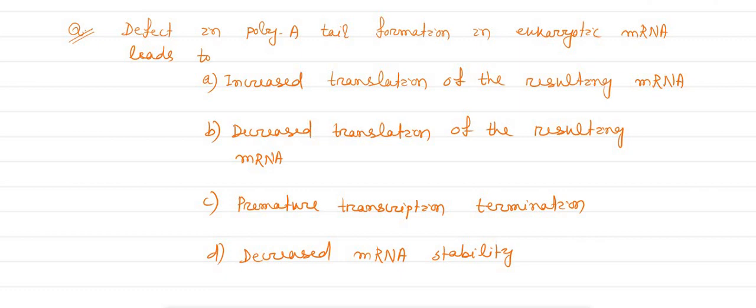Here four options are given. Option A, increased translation of the resulting mRNA. Option B, decreased translation of the resulting mRNA. Option C, premature transcription termination. And option D, decreased mRNA stability.